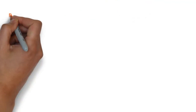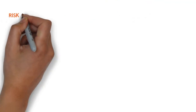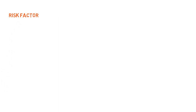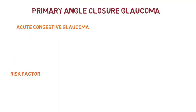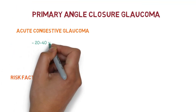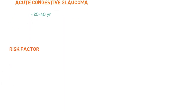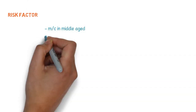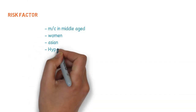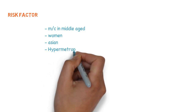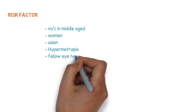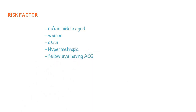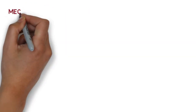The risk factors for primary angle closure glaucoma include being middle-aged (20 to 40 years), female sex, Asian ethnicity, having hypermetropia, and if the fellow eye has had acute congestive glaucoma, that is also a risk factor for the other eye.